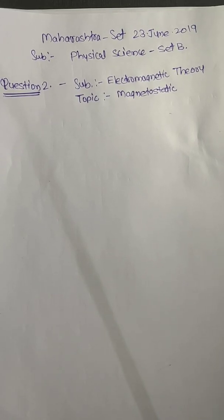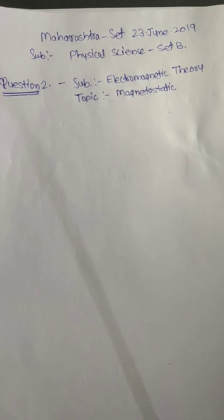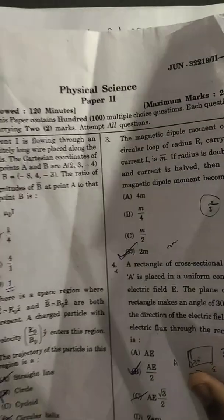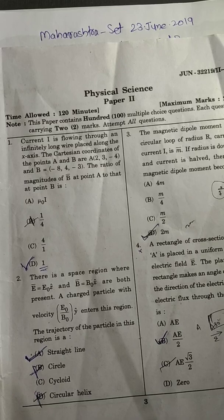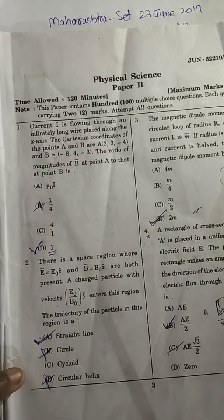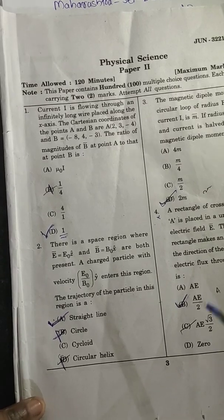Hello people, welcome to DNADU. My name is Dhanraj. We are going to discuss Maharashtra Set 23 June 2019 physical science question paper. The question is second from physical science paper.